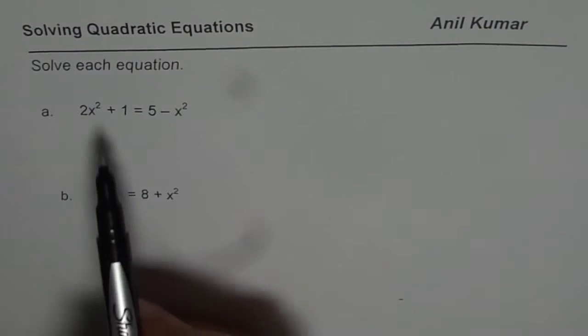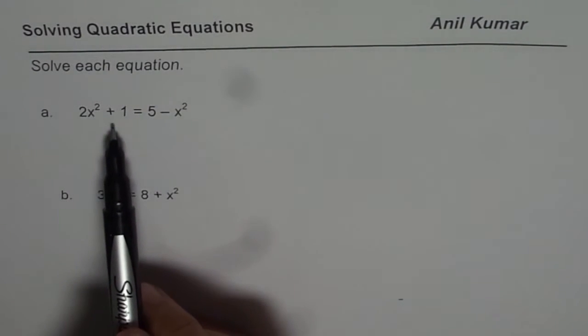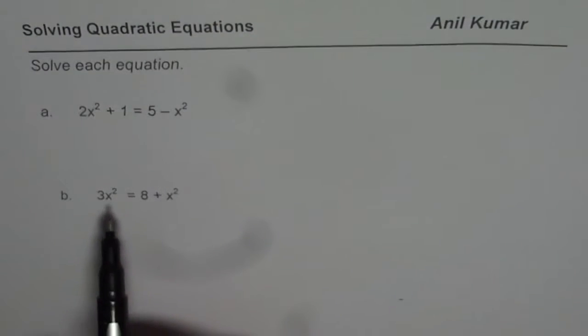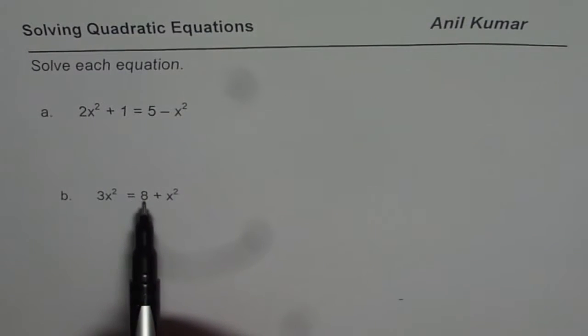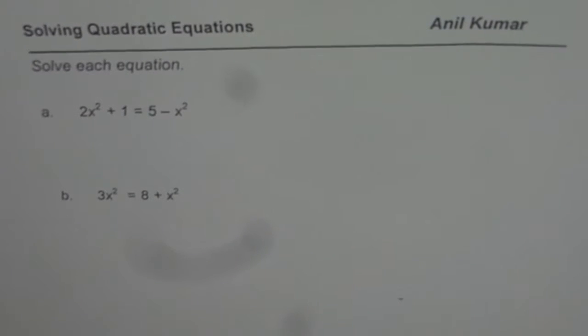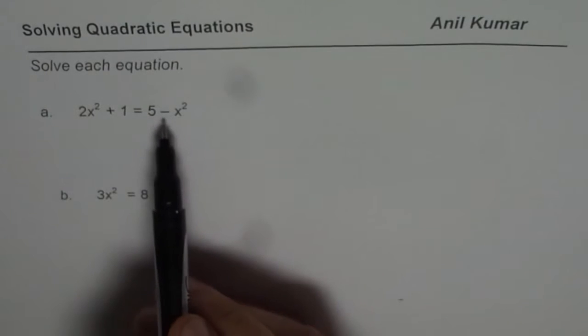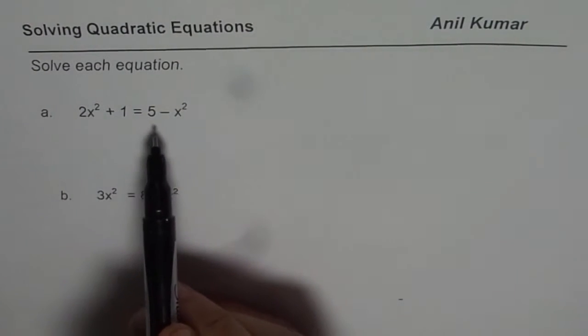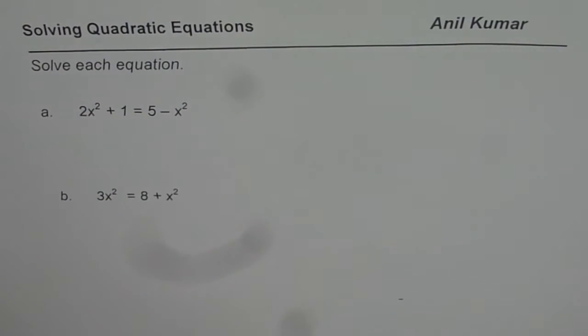We are given two equations. First one is 2x squared plus 1 equals to 5 minus x squared. Then we have 3x squared equals to 8 plus x squared. Normally, we will write all the terms on one side and 0 on the other side, but at times, you may get equations in this form also. Now, how to solve such equations?